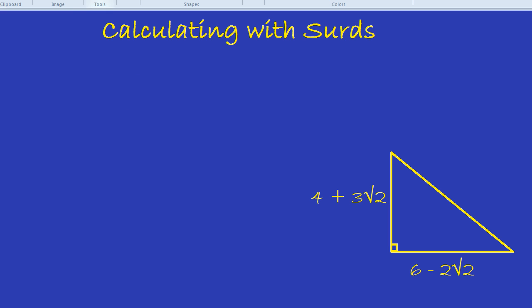First of all, what about addition using surds? For example, 2 root 2 plus 3 root 2, what would that be? We have 2 root 2s added to 3 root 2s, so overall we have 5 root 2s. So with addition and subtraction, you can simply do the calculation as you would normally.